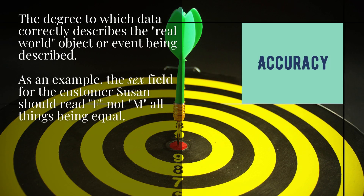Accuracy: the degree to which data correctly describes the real-world object or event being described. As an example, the sex field for the customer Susan should read F, not M, all things being equal.